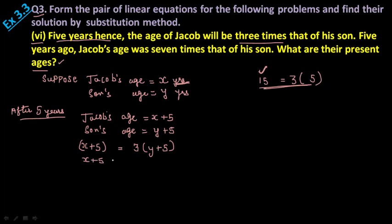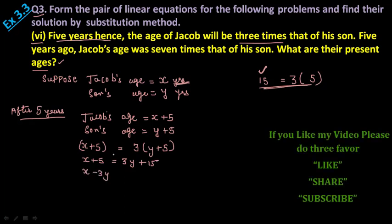x plus 5 equals to 3y plus 15. Take this 3y on that side, x minus 3y and plus 5 on that side, so 15 minus 5. So your first equation will be x minus 3y is equal to 10, equation number 1.